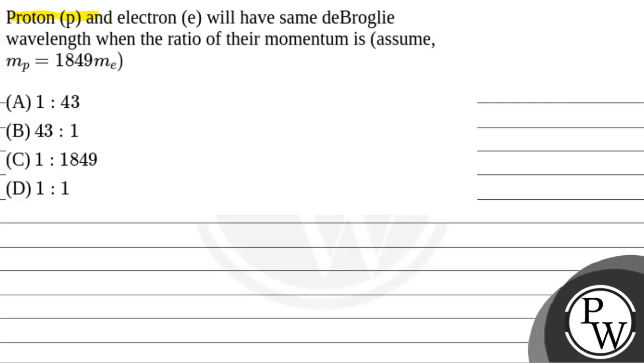The question says that proton P and electron E will have same de Broglie wavelength when the ratio of their momentum is—assume mass of proton is equal to 1849 times mass of electron.